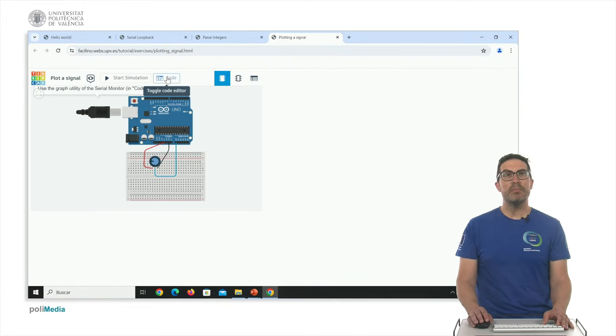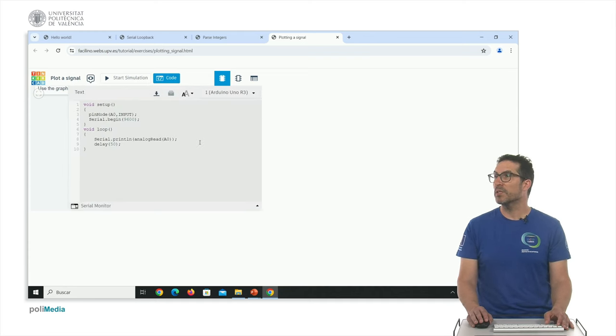In order to plot the signals here, we have to access to the code tab as well. And in the serial monitor, we have here this button, which is called toggle graph, that will show the graph, the signal graph that I want to plot.